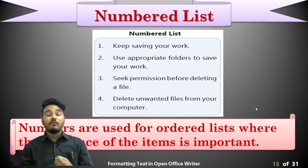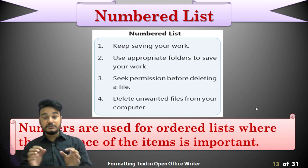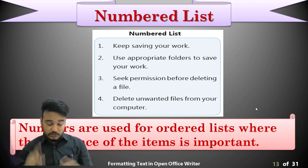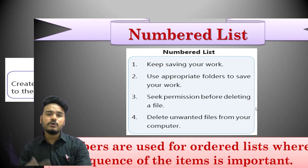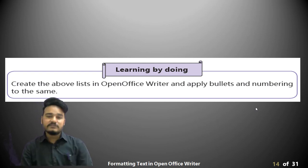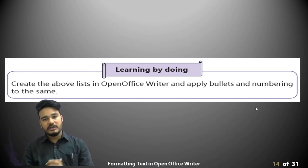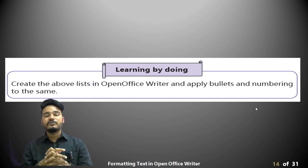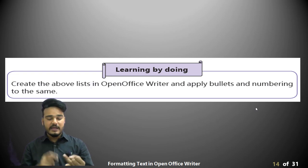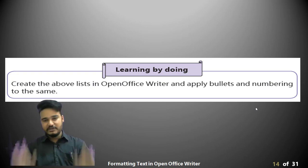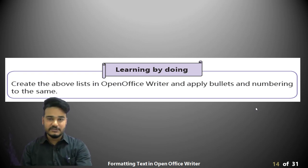Numbers are used for ordered lists where the sequence of items is important. How to apply bullets and numbering — this task will be done in the computer lab or on your home computer. Create the same list in OpenOffice Writer and apply the bullets and numbering option to it.